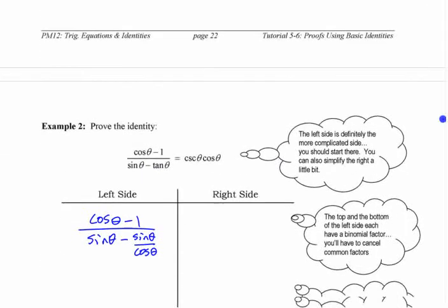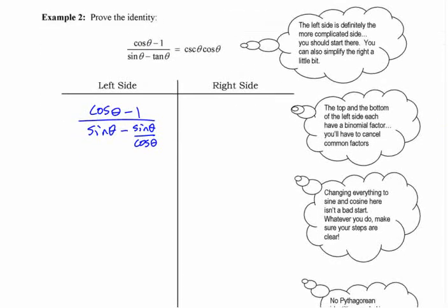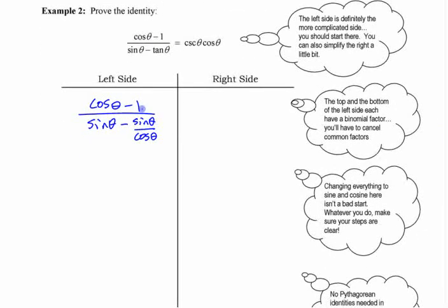This one doesn't have that. This one has two things that have two terms, two binomials. So probably you're not going to use a Pythagorean identity. Probably at some point you're going to cancel out a binomial factor. If you want to do that, like this is a binomial factor. There's no fractions on the top. I would leave the top alone.